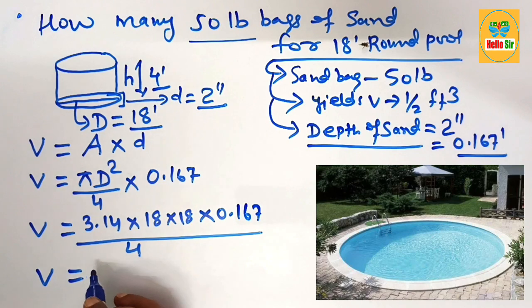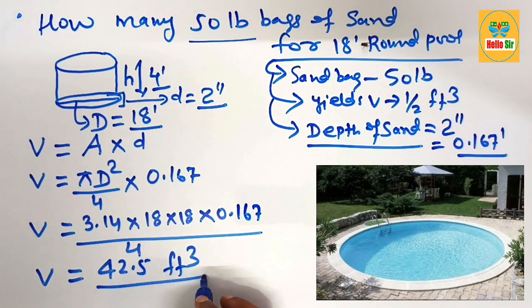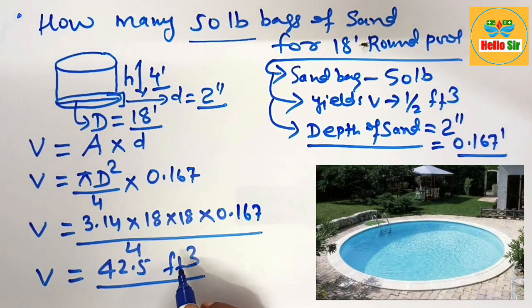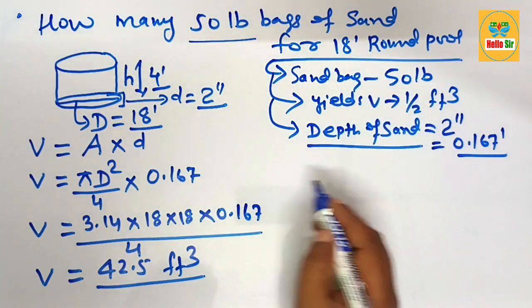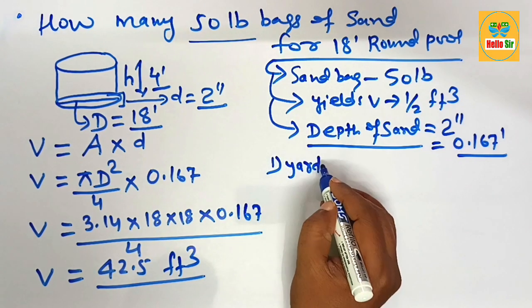It means you need about 42.5 cubic feet of sand for an 18-foot round pool. If you want to calculate in yards, how many cubic yards of sand are required?